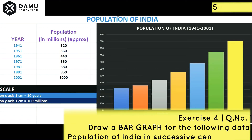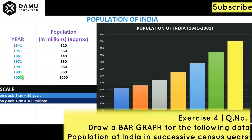Hello viewers. In this session we are going to discuss what is the exercise for solutions. The first question is: draw a bar graph for the following details — population of India in successive census years, given in millions.